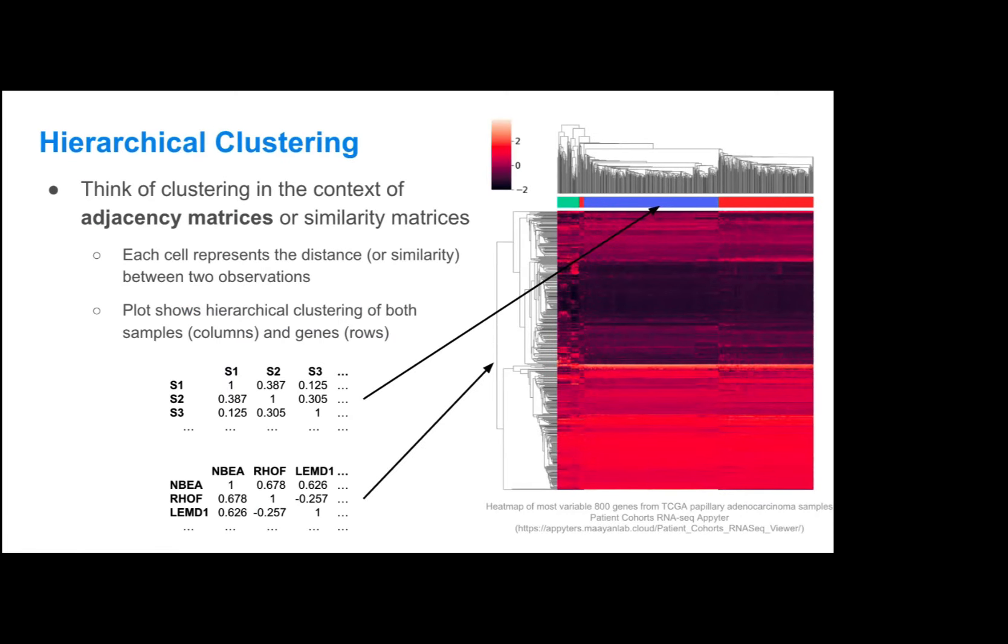Hierarchical clustering creates these overlapping clusters or this tree-like structure of overlapping clusters. You can think of hierarchical clustering in the context of adjacency matrices or similarity and distance matrices, where you would have a square matrix, and each cell would represent the distance or the similarity, depending on the calculation you use, between two observations.